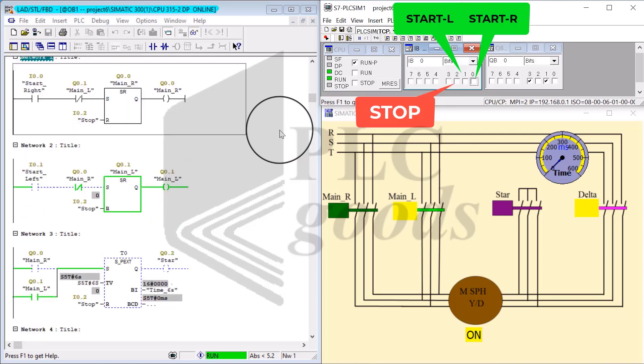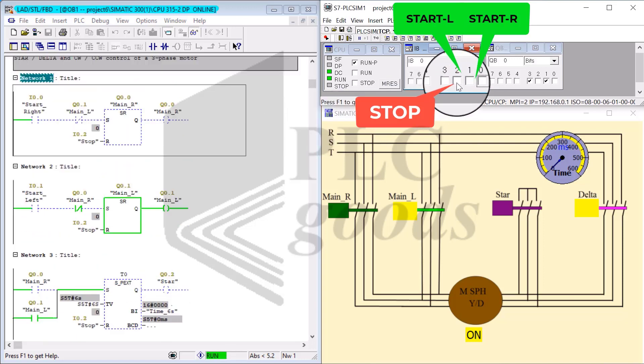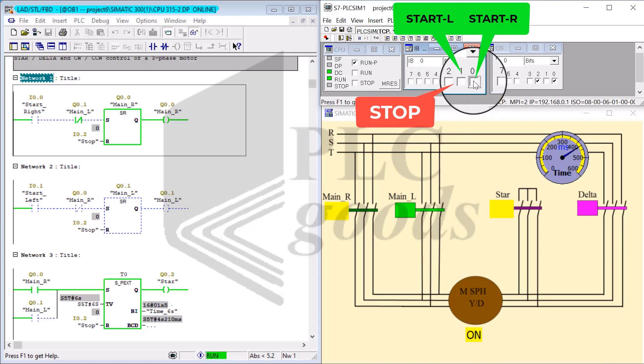I have to stop it first. As I do, and now I go ahead and tap on start right. Again, this time notice that I won't be able to change the direction by tapping on start left. I have to stop it again, and this time tap on start left.